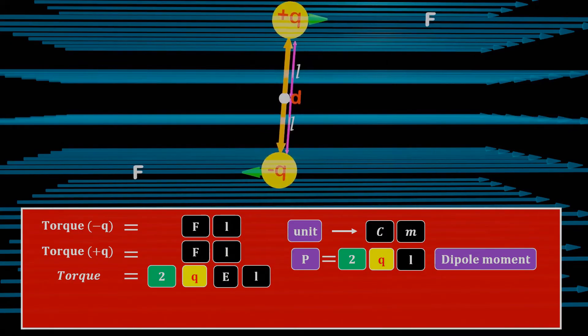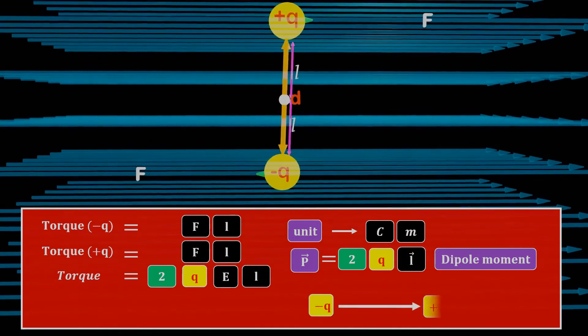If we talk about vectors, L is a vector quantity, so the dipole moment is also a vector quantity. It has a direction, which is typically from the negative end to the positive end in physics.